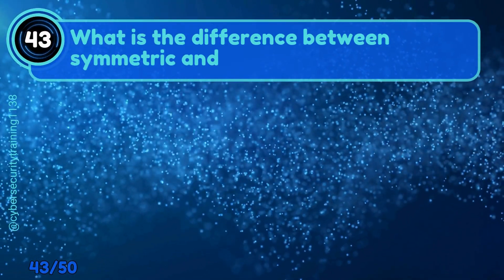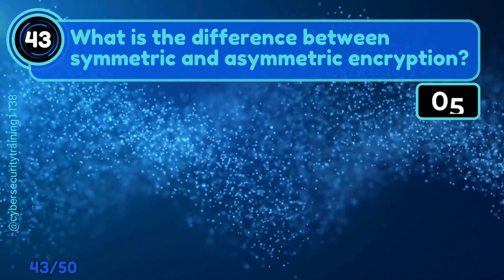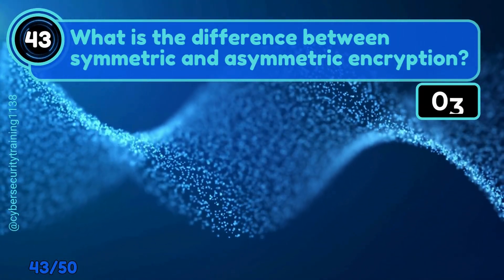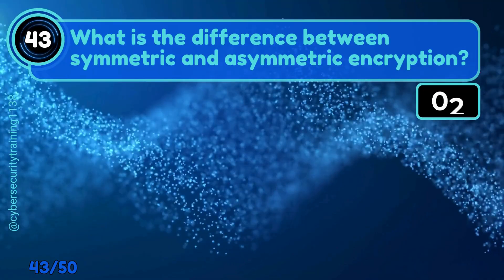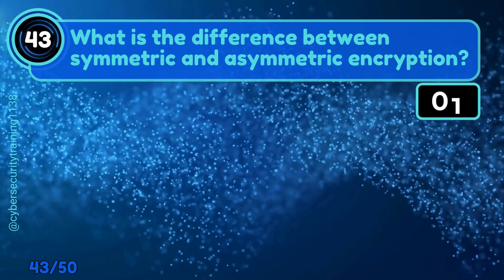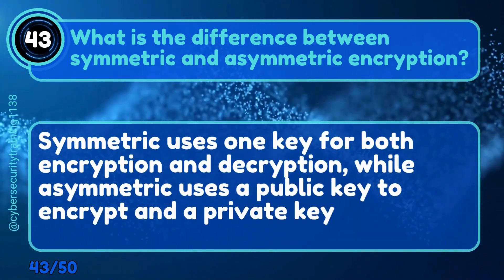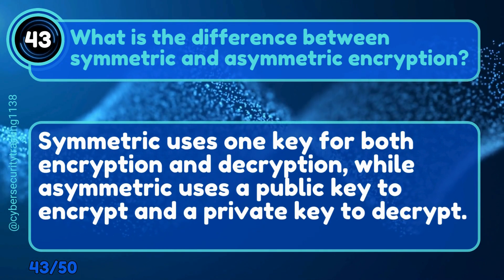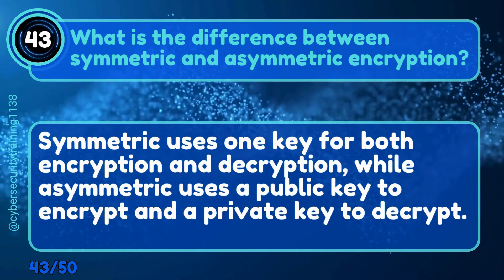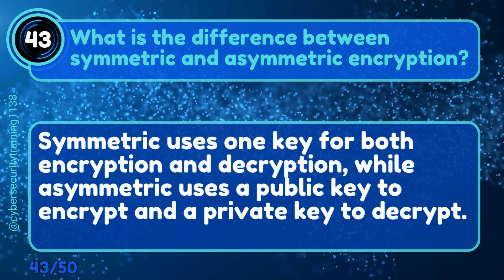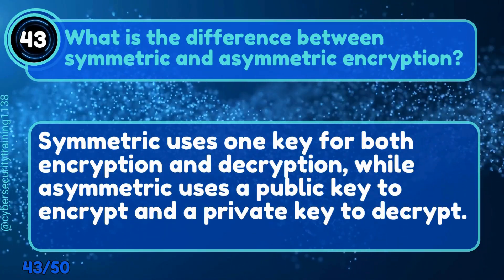Question 43: What is the difference between symmetric and asymmetric encryption? Symmetric uses one key for both encryption and decryption, while asymmetric uses a public key to encrypt and a private key to decrypt.